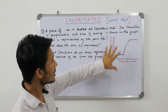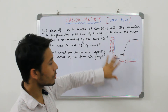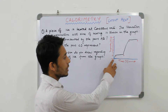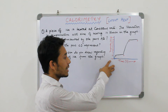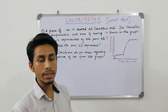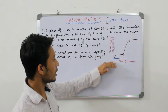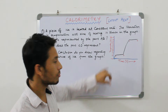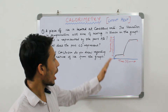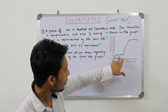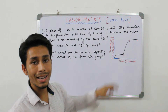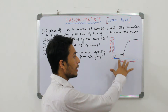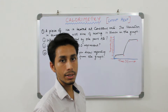The graph is plotted for temperature versus time. On the y-axis we have temperature. Initially it is showing minus 10 degrees centigrade — that is ice in solid state. On further heating, the temperature rises to 0 degrees centigrade, and then the temperature remains constant. That is, ice is absorbing heat energy and melting. So AB denotes the melting of ice.